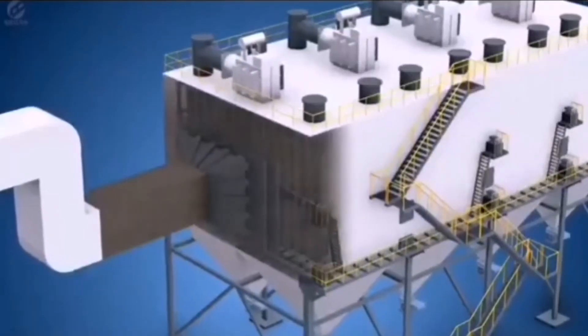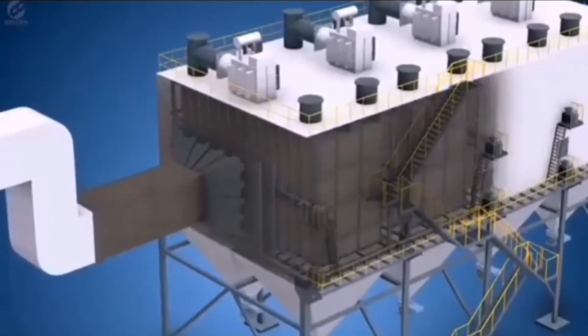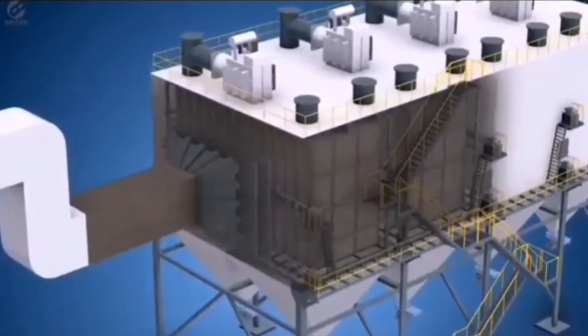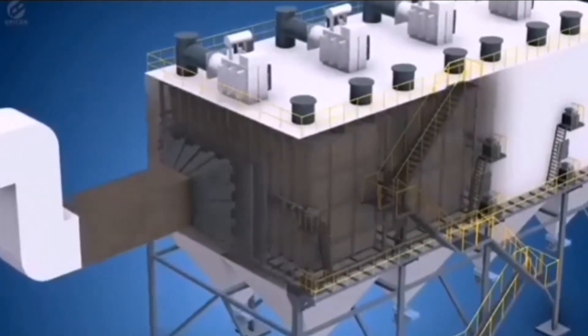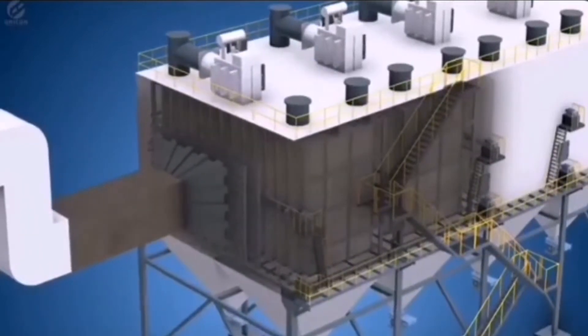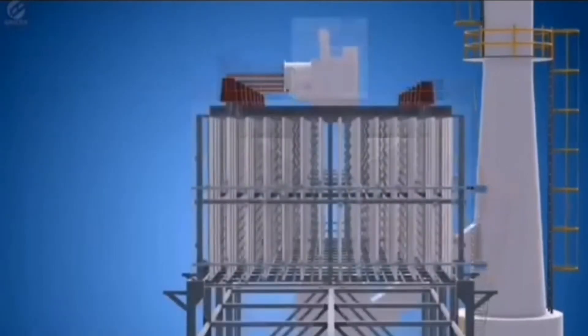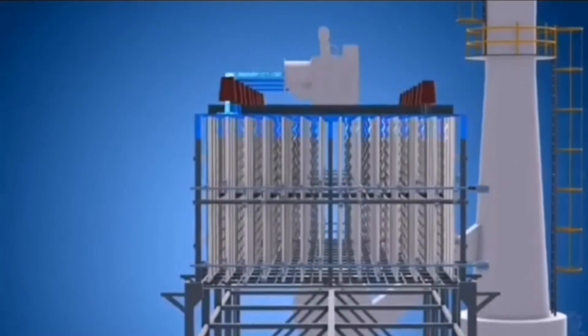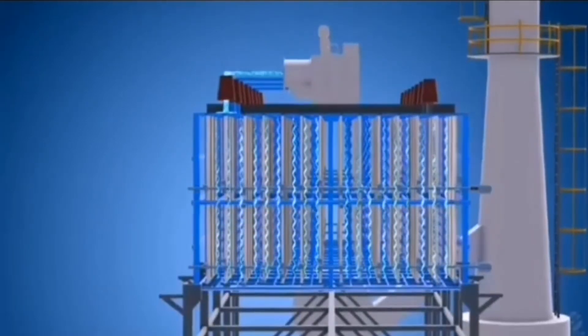The flue gas along with suspended particles enter the ESP through the CFD optimized splitter and GD screen, which evenly distribute the flue gas across the entire ESP. The emitting electrodes in the center of gas flow are maintained at high voltage.